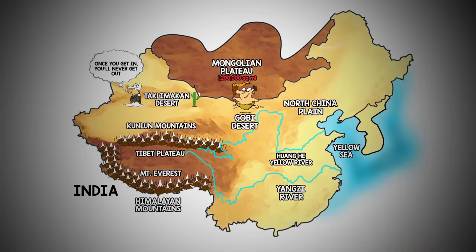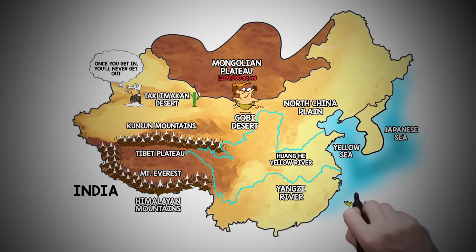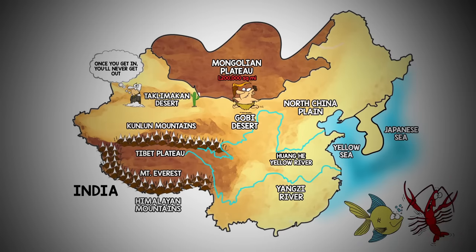Beyond the peninsula of Korea, the Japanese Sea joins with the Yellow Sea, offering the eastern shores of China diverse food, such as fish and crustaceans.